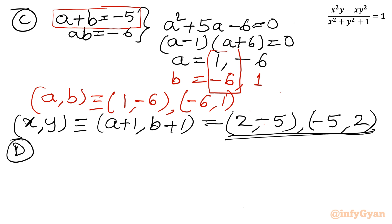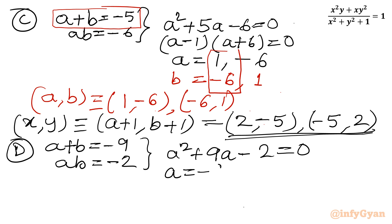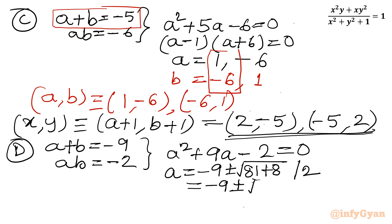For System D (a+b = -9, ab = -2): the quadratic a² + 9a - 2 = 0. Applying the quadratic formula gives a = (-9 ± √89) / 2, which is a non-integer value, so we reject System D.